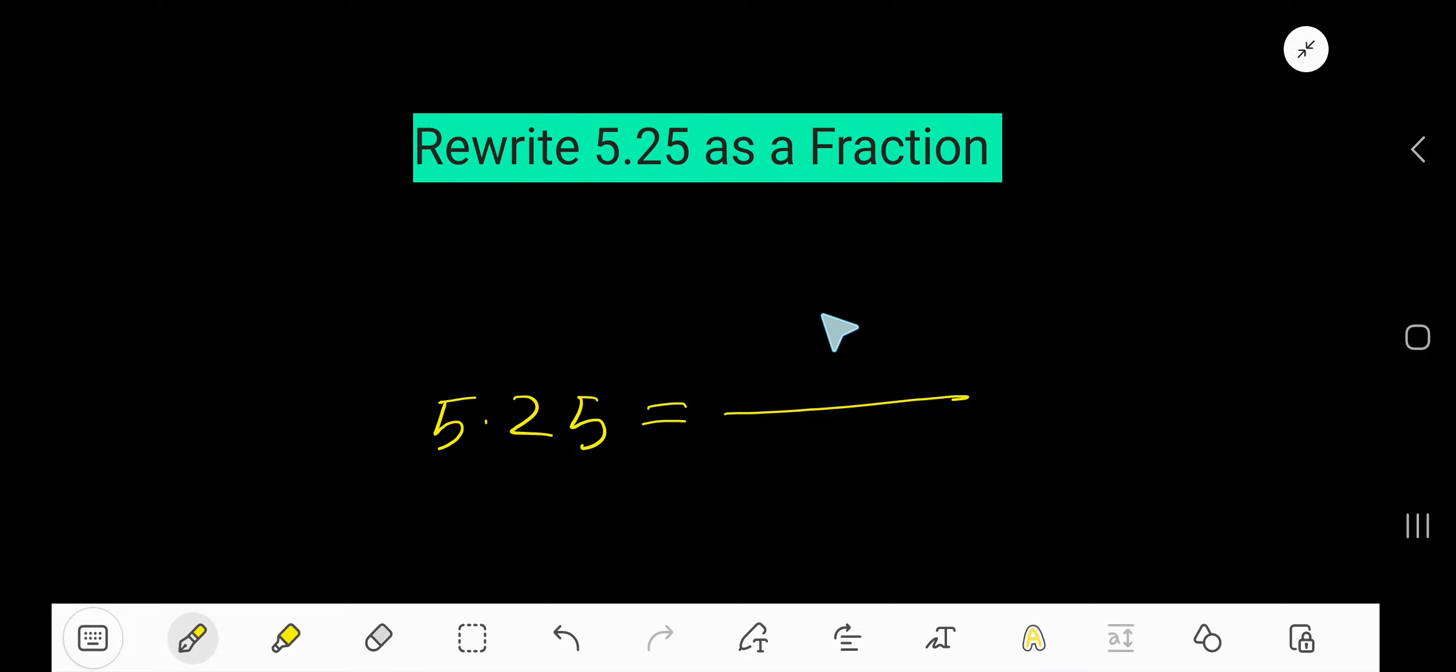Write 5.25 as a fraction. We need numerator and we need denominator. For numerator, just remove this decimal and write the number you are getting.